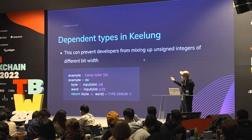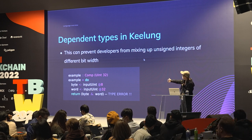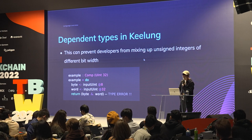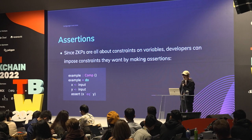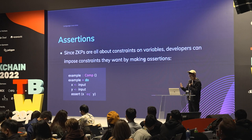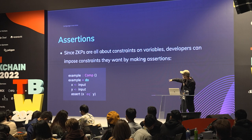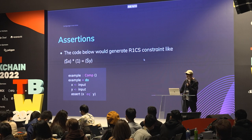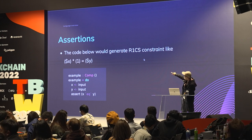This allows us to annotate numbers in the type itself, which prevents developers from mixing unsigned integers of different widths together. This can prevent a large range of type errors. Since ZKPs are all about constraints on variables, developers can impose the constraints they want by making assertions. For example, this would generate a constraint saying X must be equal to Y.